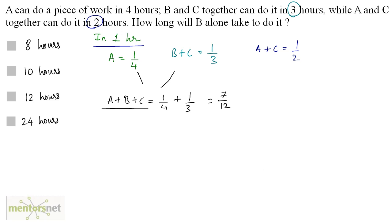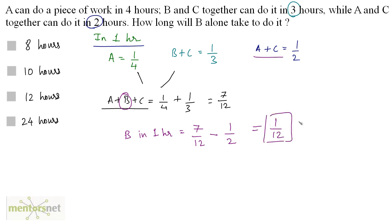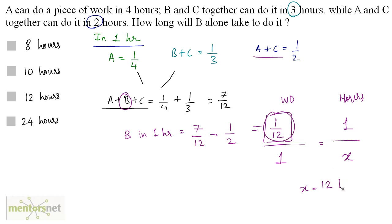We have the amount of work done by all of them, and we have the amount of work done by A and C. Subtracting the work done by A and C from the work done by all of them gives the work done by B. So B's work in 1 hour equals 7 by 12 minus 1 by 2, which equals 1 by 12. The time for B to complete the work alone is the reciprocal of 1 by 12, which is 12 hours.